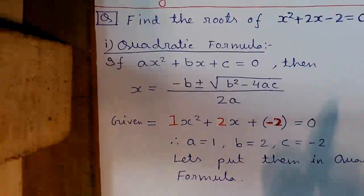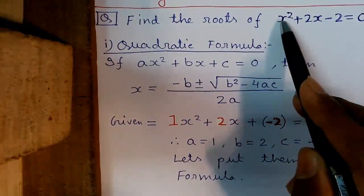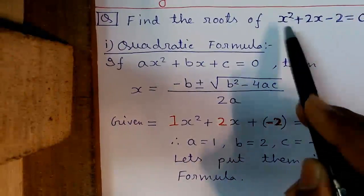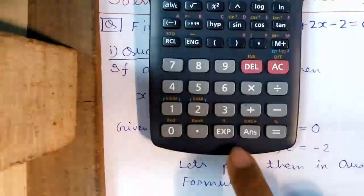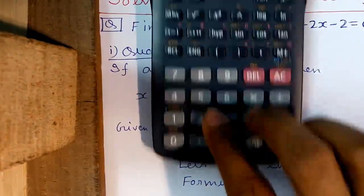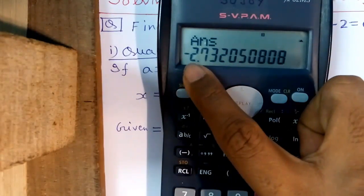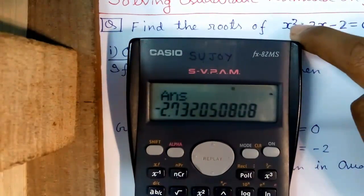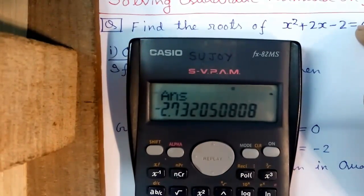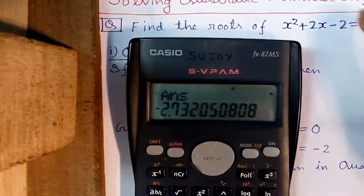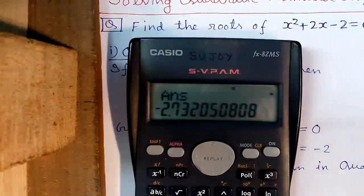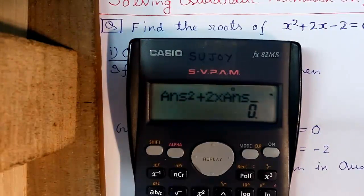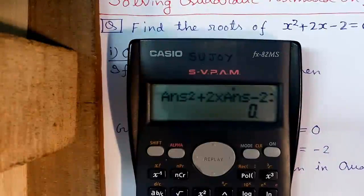And now the meaning of root. Root is that value of X which satisfies the equation. That means if we put the positive or negative root value in place of X into the equation, it should give us equals to 0. Our root value is currently stored in the answer variable. Press Answer and press equals to see that — our current root is the negative root, that is minus 2.73205. According to the equation, if we do Answer square plus 2 into Answer minus 2, it should give us 0. So: Answer square plus 2 into Answer minus 2, press equals — that is equals to 0.